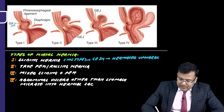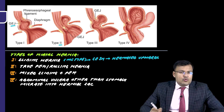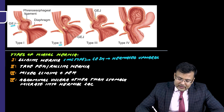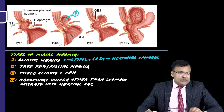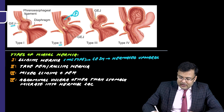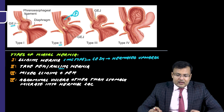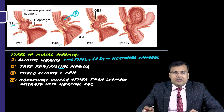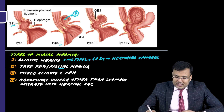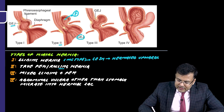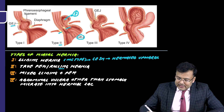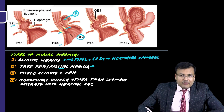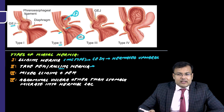Type 2 hiatal hernia is known as true paraesophageal hernia, also known as rolling hernia. Here you can see there is herniation of the fundus of stomach by the side of the esophagus. In Type 2, there is asymmetric herniation of the stomach next to the esophagus, and the GE junction is not herniated — it remains at its normal location.